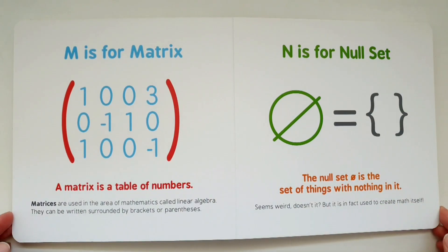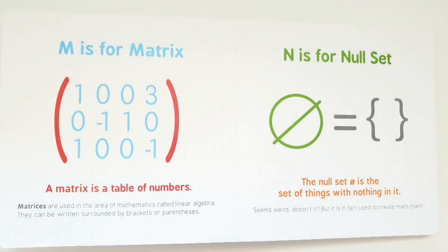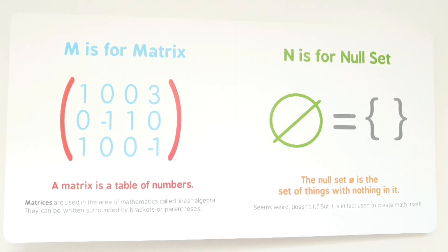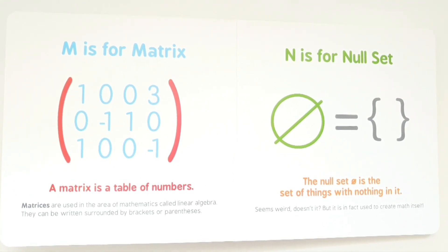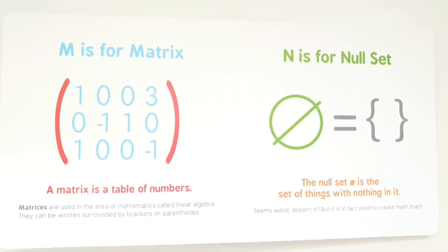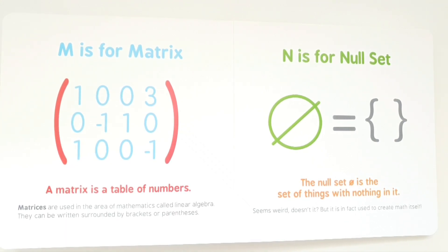M is for matrix. A matrix is a table of numbers. Matrices are used in the area of mathematics called linear algebra. They can be written surrounded by brackets or parentheses.